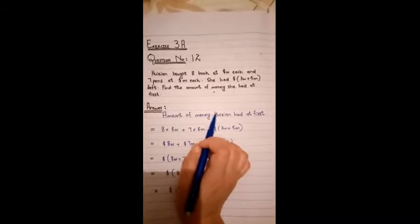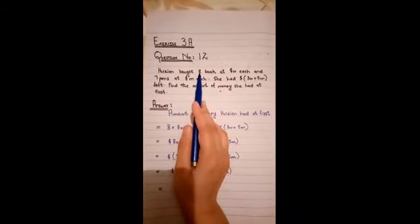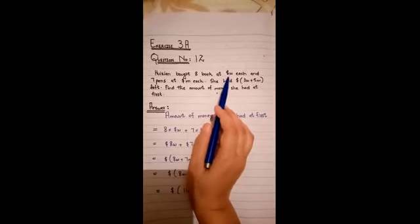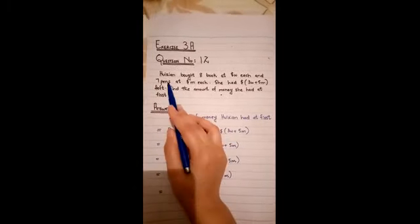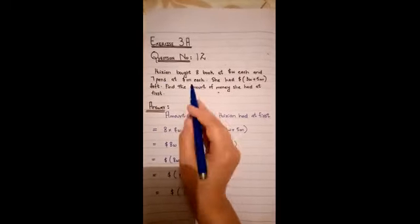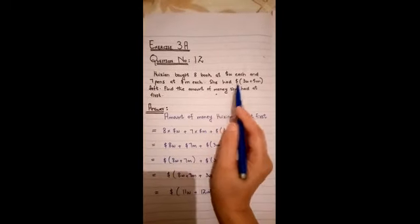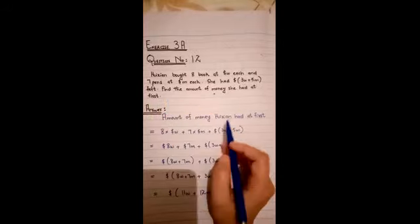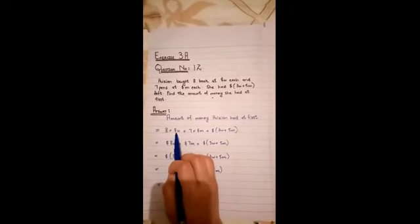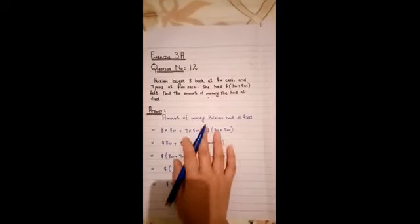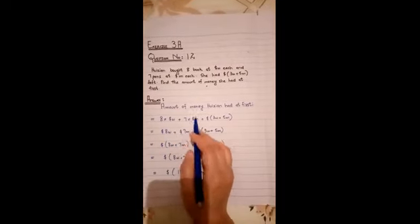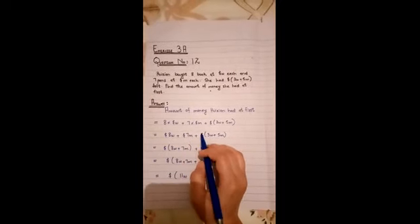Now amount of money Huishyan had at first. 8 books that she bought at $W, 8 multiplied by $W plus 7 pens, that will be $M each. 7 multiplied by $M and she had $3W plus 5M left. So $3W plus 5M. Okay, she bought 8 books at $W, 8 times $W, plus and 7 pens at $M each, 7 times $M, and she had that left.